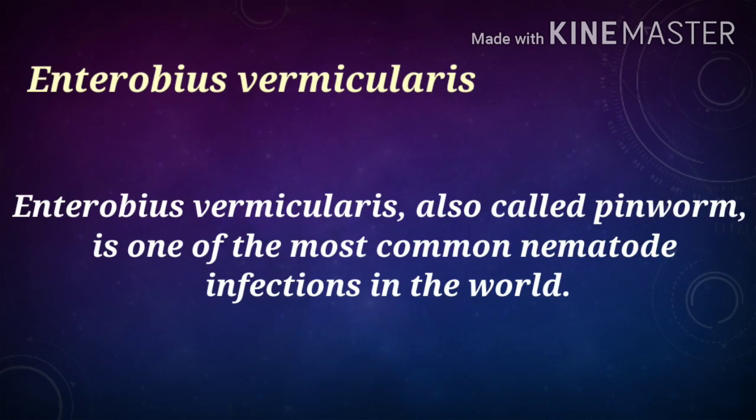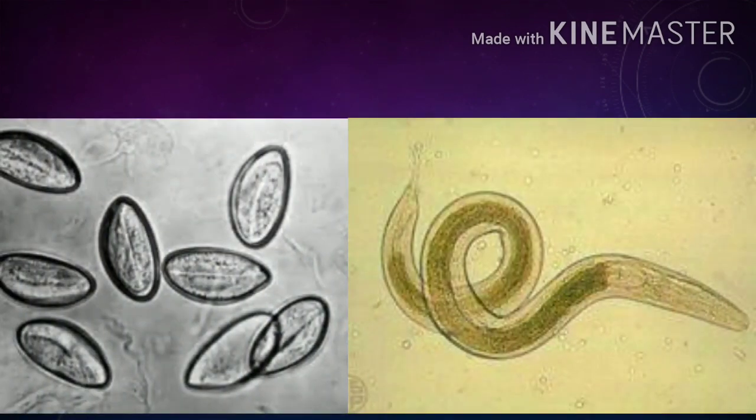Next is Enterobius vermicularis. Enterobius vermicularis is also called the pinworm. It is one of the most common infections in the world. Look at this picture — the first picture shows the Enterobius vermicularis egg, and the second picture shows the Enterobius vermicularis worm.